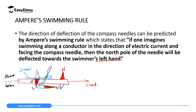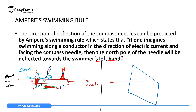Now I want to draw this in a more elaborate way so that you can conceptualize what we are saying here. If you have this conductor passing through a cardboard — I want to draw a cardboard here. This is our cardboard. Then we have the same conductor which is moving from this side, penetrating through the cardboard to the other side, and then the current is moving in the same direction like that.